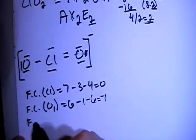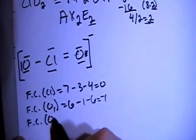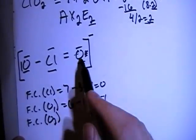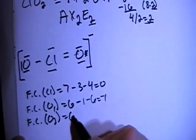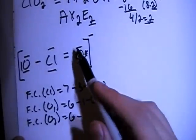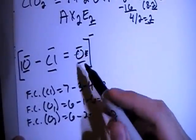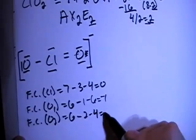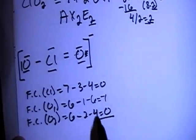Okay, now we can calculate the formal charge of oxygen with 2 bonds, so O sub 2, which is this oxygen here. So that's 6 valence brought in, minus 2 bonds, minus 1, 2, 3, 4 non-bonding electrons, which is an overall formal charge of 0.